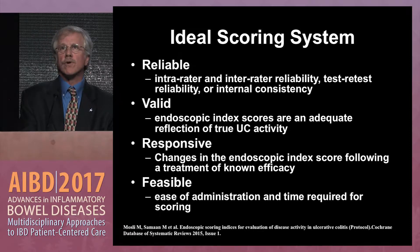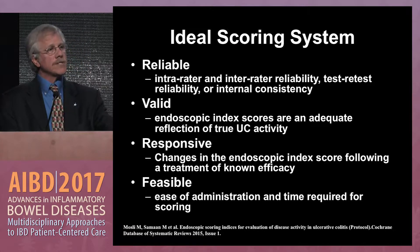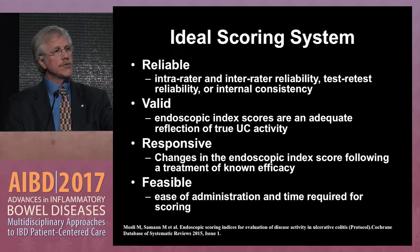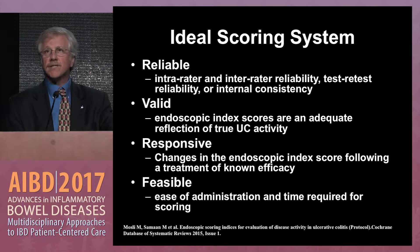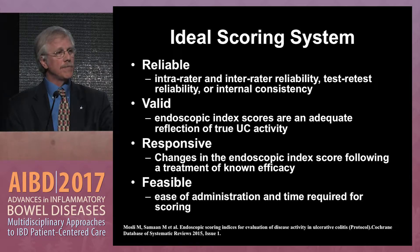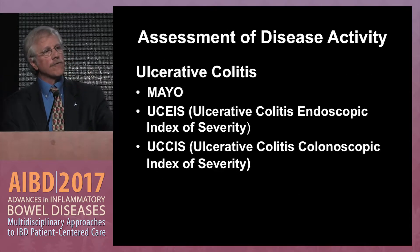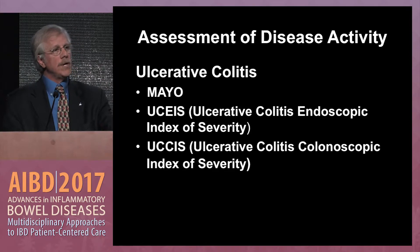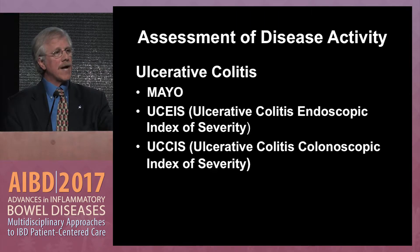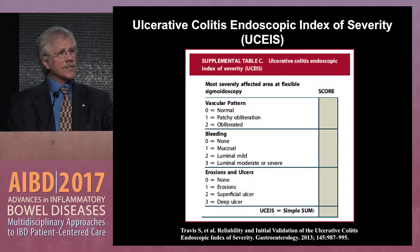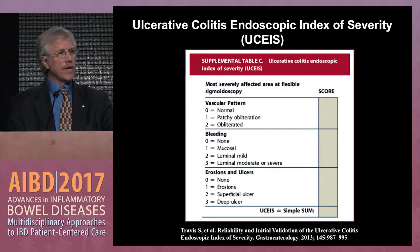When using endoscopic scoring systems, we want a system that's reliable with both intra-rater and inter-rater reliability and retest reliability. It should be valid, responsive — meaning when patients get better you see a change in the score — and clearly it should be feasible. For ulcerative colitis we have the Mayo, the UCEIS, and the UCCIS. The Mayo score is the one we all use in clinical practice. The UCEIS looks at vascular pattern, bleeding, and erosions or ulcers, scored at the most severe area on flexible sigmoidoscopy.